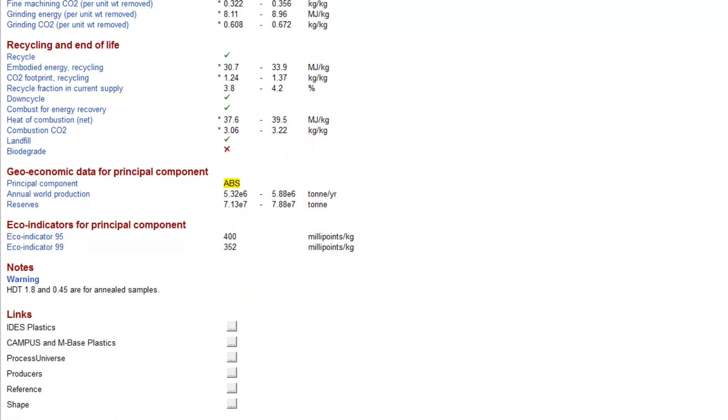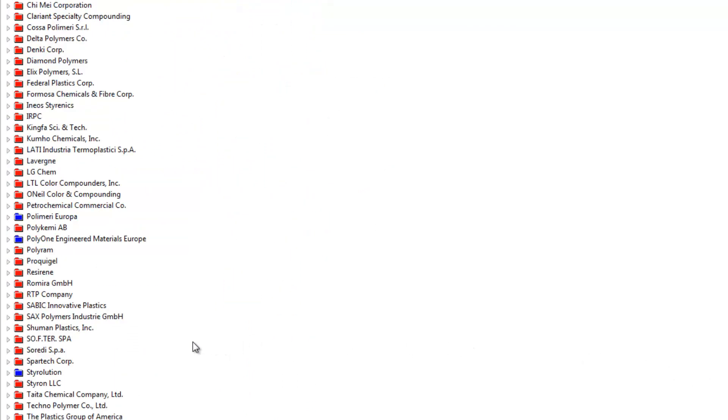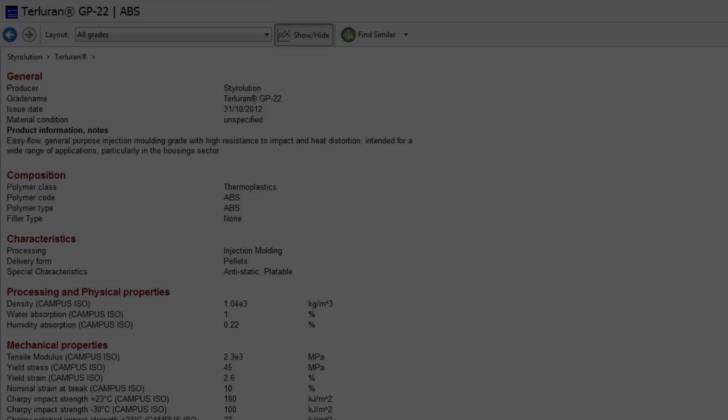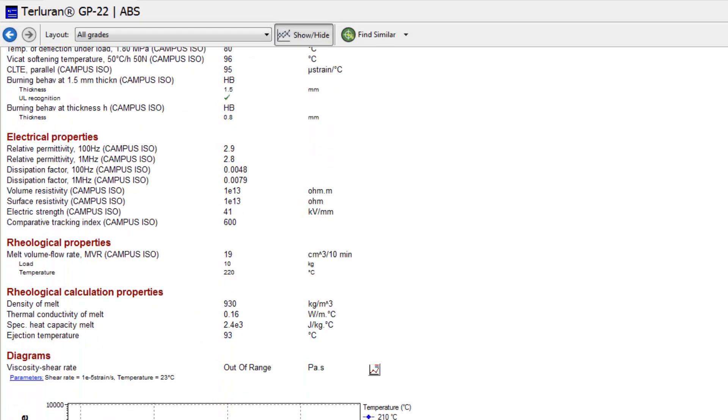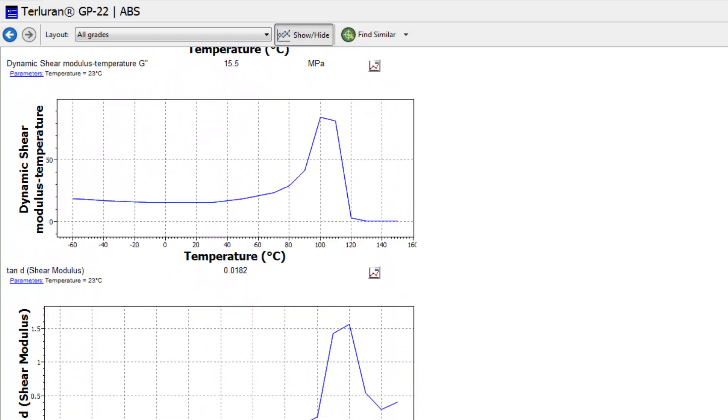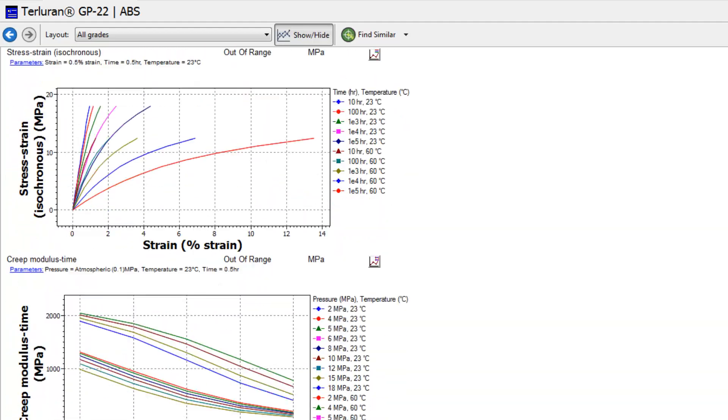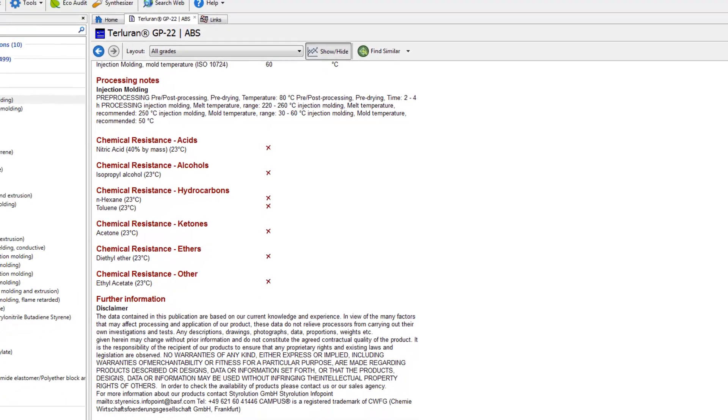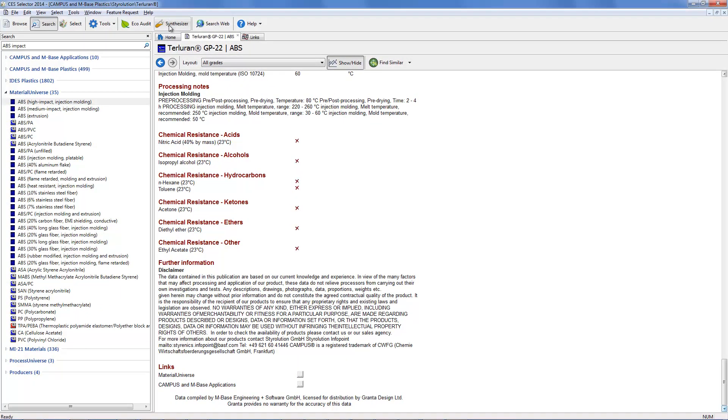At the bottom of the datasheet are links to specific grades of this material. These connect to records in the in-depth data sets provided within CS Selector. In this case, it's a datasheet for Tolurin GP22 within the Campus and Embase Plastics dataset. So Material Universe can act as a central screening index, enabling you to find and review materials of interest.